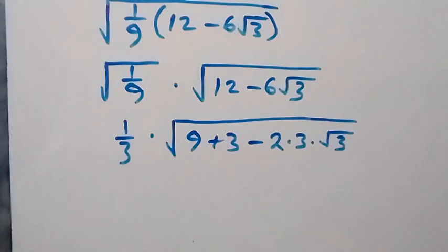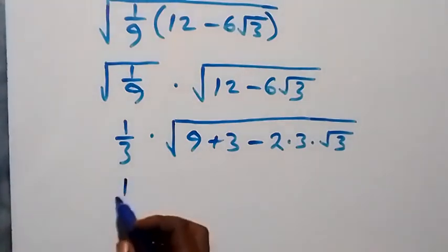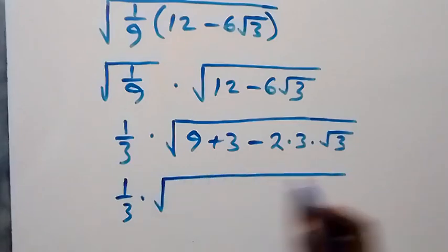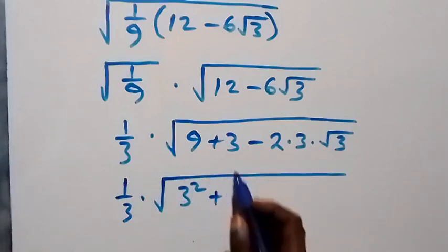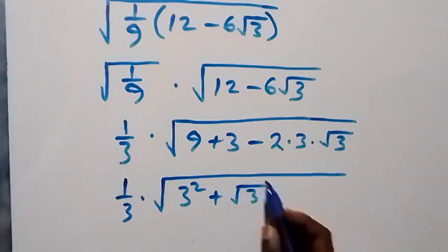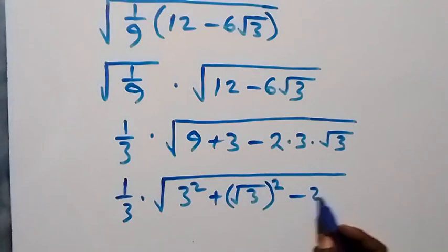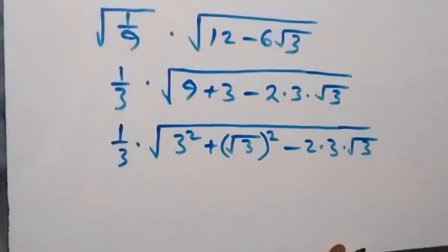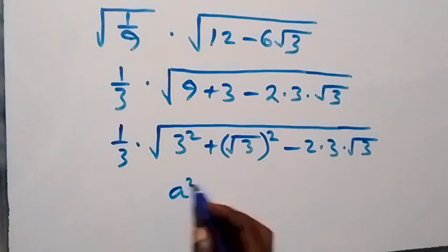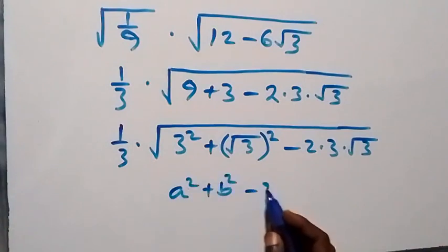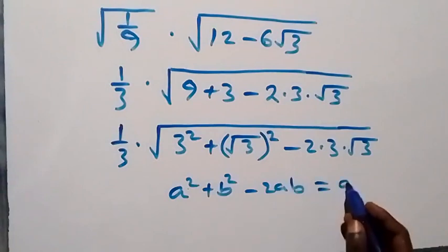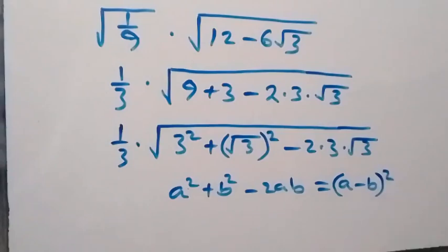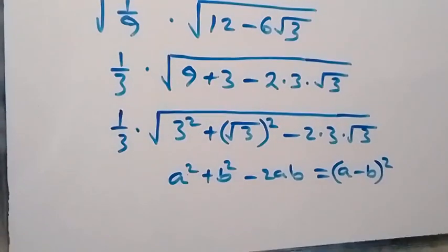We can write 9 as 3 squared, and we have 1 over 3 times square root of 3 squared plus (root 3) squared minus 2 times 3 times root 3. From the identity: square root of a squared plus b squared minus 2ab equals (a minus b) squared. Here a is 3 and b is root 3.